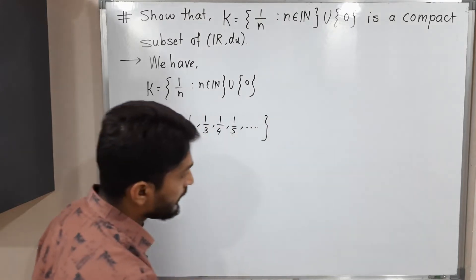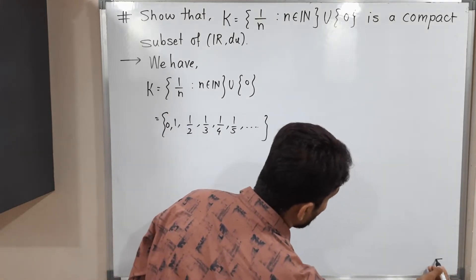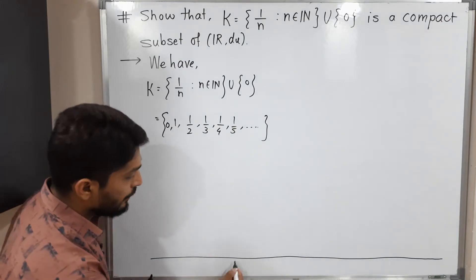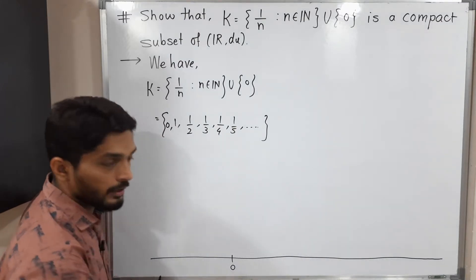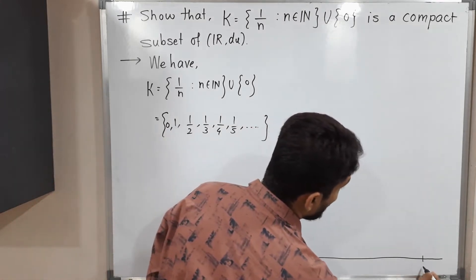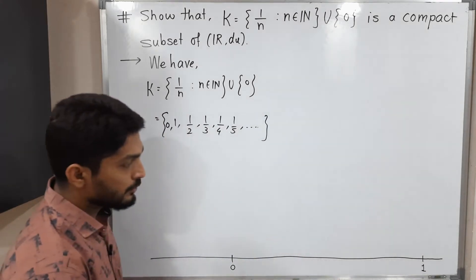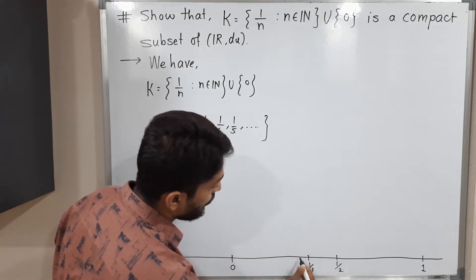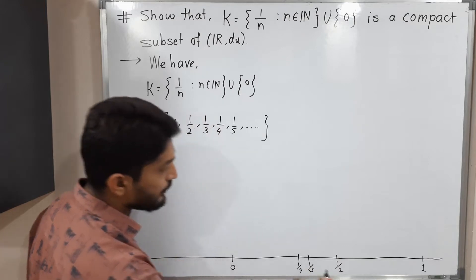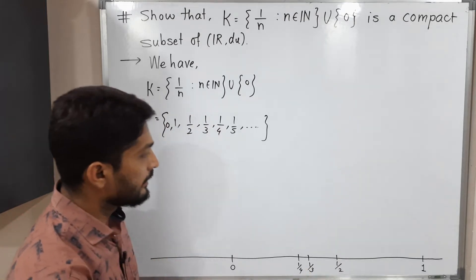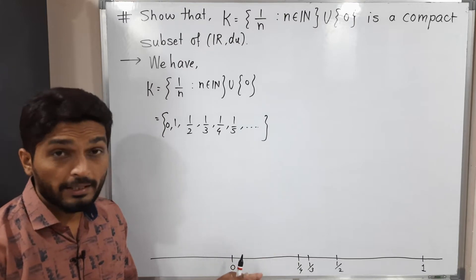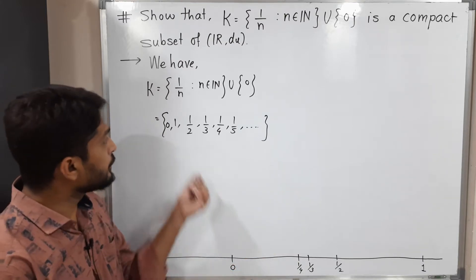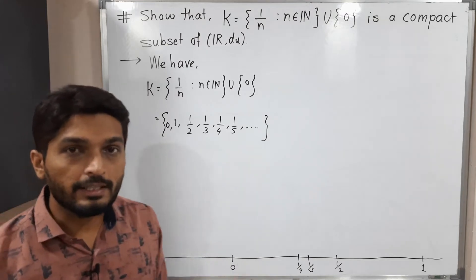So let me draw the diagram so you can easily understand. Suppose this is our real line. We have 0 somewhere here, and suppose 1 is here. So 1/2 will be here, next 1/3, then 1/4. In this way we get 1/5, 1/6, 1/10, 1/100, 1/1000 and so on — it will never terminate. Union with {0}. So such a set K we have.